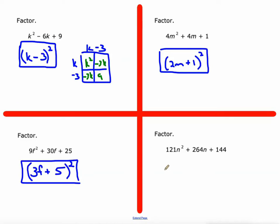Bigger numbers here. The process doesn't really change. Perfect square to begin with. Square root of 121n squared is 11n. Square root of 144 is 12. We can write this as the square of a binomial.